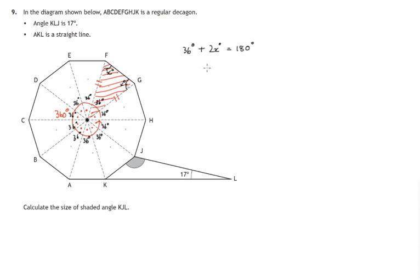So let's find out what x is. Let's take 36 away from both sides, 36 degrees away from both sides. That'll mean that twice x is 144 degrees, therefore x,